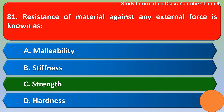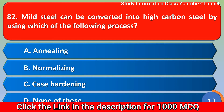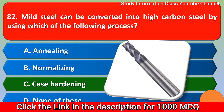Next question: Mild steel can be converted into high carbon steel by using which of the following process? Option A handling, option B normalizing, option C case hardening, option D none of these. The correct answer is option C, case hardening.